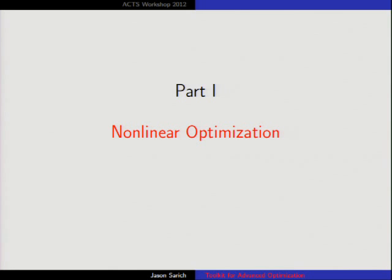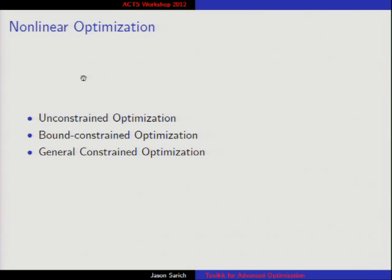I'll just give a few examples. We have unconstrained optimization, bound constraint optimization, and general constraint optimization. We don't do general constraints in TAO. We get a lot of questions — how do I solve my problems with constraints? — and this is not something we can solve right now.